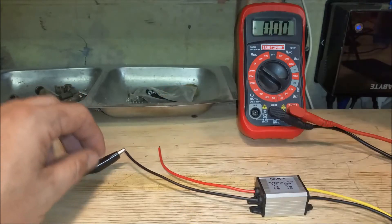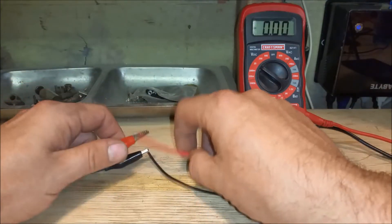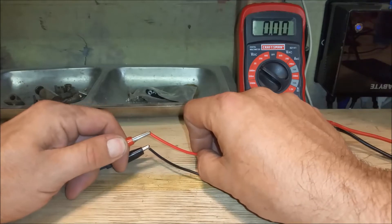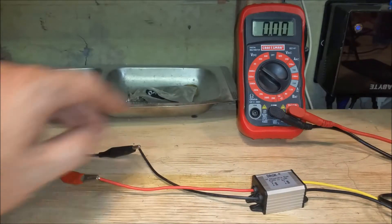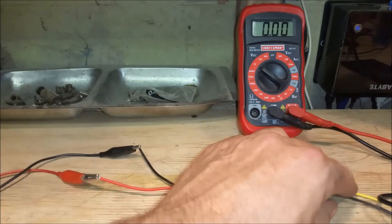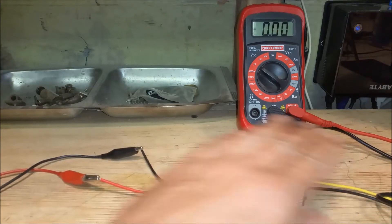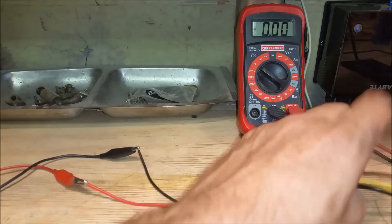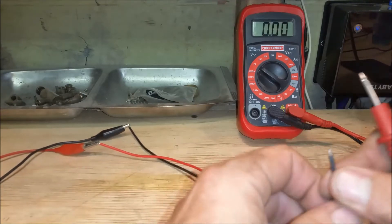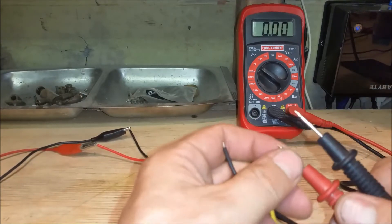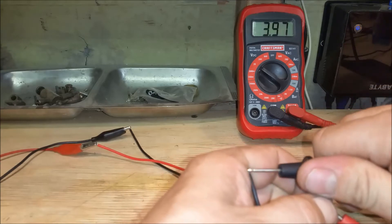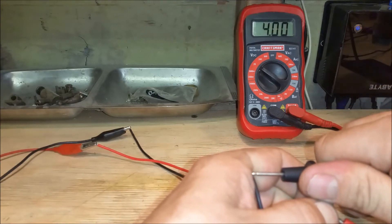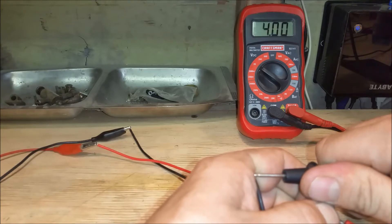So we've got 12 volts going in. Let's check the output voltage here. It's 3.4 volts out. So with 12.3 volts in, we've got 4 volts out.